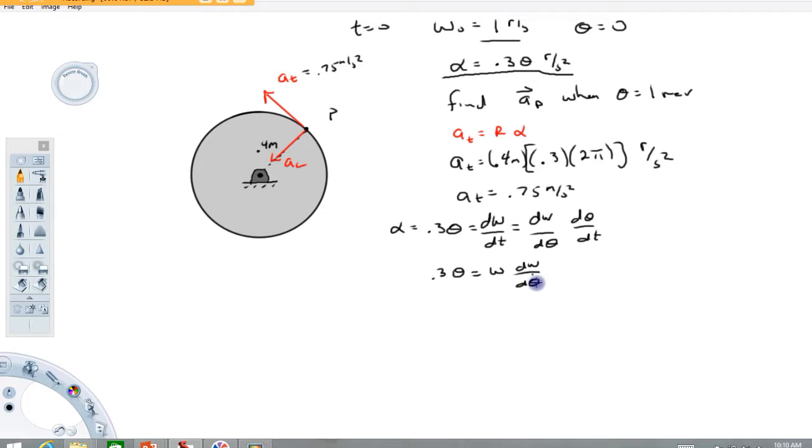Now d theta dt is what we call the angular velocity here. So the next line, we've got 0.3 times theta is equal to the angular velocity times d omega dt. I'm sorry, d theta, not dt, d theta. So what I've done is rewritten this derivative in terms of theta and the angular velocity. Okay, and this is pretty easily solved by separation. The next line is going to read 0.3 theta d theta equals the angular velocity times the derivative of the angular velocity. Okay, this is going to integrate to 0.3 theta squared over 2.